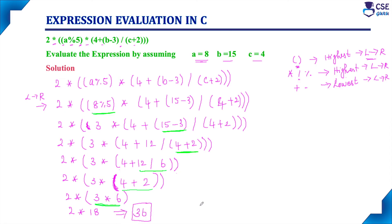In this way we evaluate a C expression. First, identify all the operators present in the given expression and note the priority of each operator along with its associativity. Then, according to the precedence and associativity rules, evaluate the expression step by step.